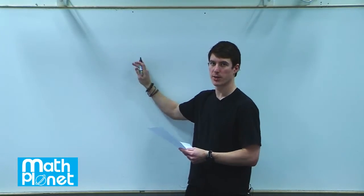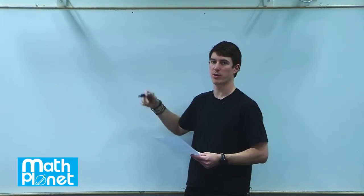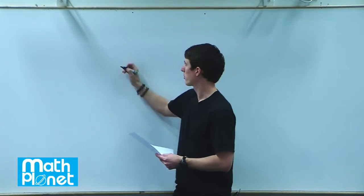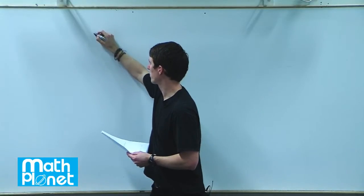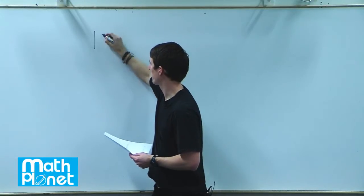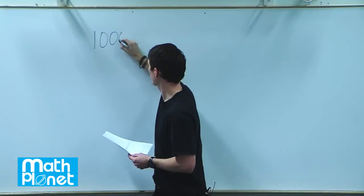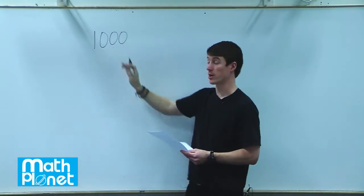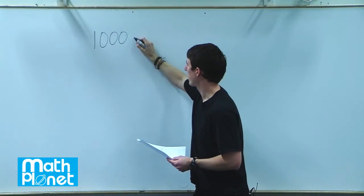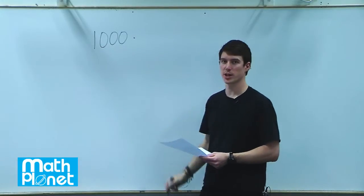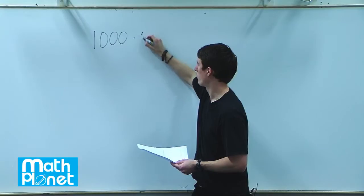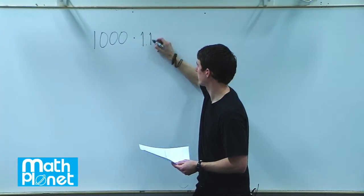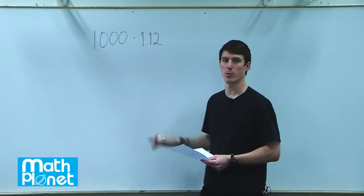So we need to write a formula that expresses that and then solve for the length of time. The formula is given by this: We start with this value, $1,000. So this is our starting point. We multiply that by the percentage increase plus 100%, and we convert that into decimals. So 100% plus 12% is written like that, 1.12.